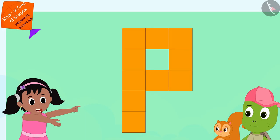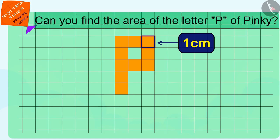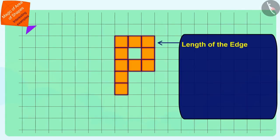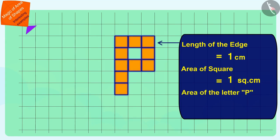Children, if the side of every square shaped sticker used by Pinky is one centimeter, can you find the area of the letter P of Pinky? The length of the edge of each square shaped sticker is one centimeter, so the area of each square shaped sticker will be one square centimeter. Pinky has used ten such stickers in her name letter P, therefore the area of the letter P in her name will be one times ten, ten square centimeters.